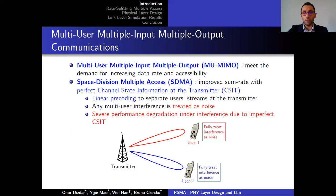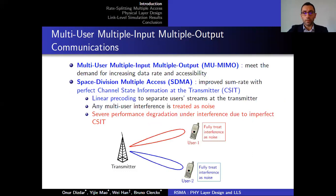Multi-User MIMO has been a key technology to meet the demand for increasing data rate and accessibility in emerging communication systems. The most common form of Multi-User MIMO is Space Division Multiple Access (SDMA). SDMA relies on linear precoding to separate user streams at the transmitter. At the receiver side, any multi-user interference is treated as noise. Therefore, SDMA suffers from severe performance degradation under interference due to imperfect CSIT.